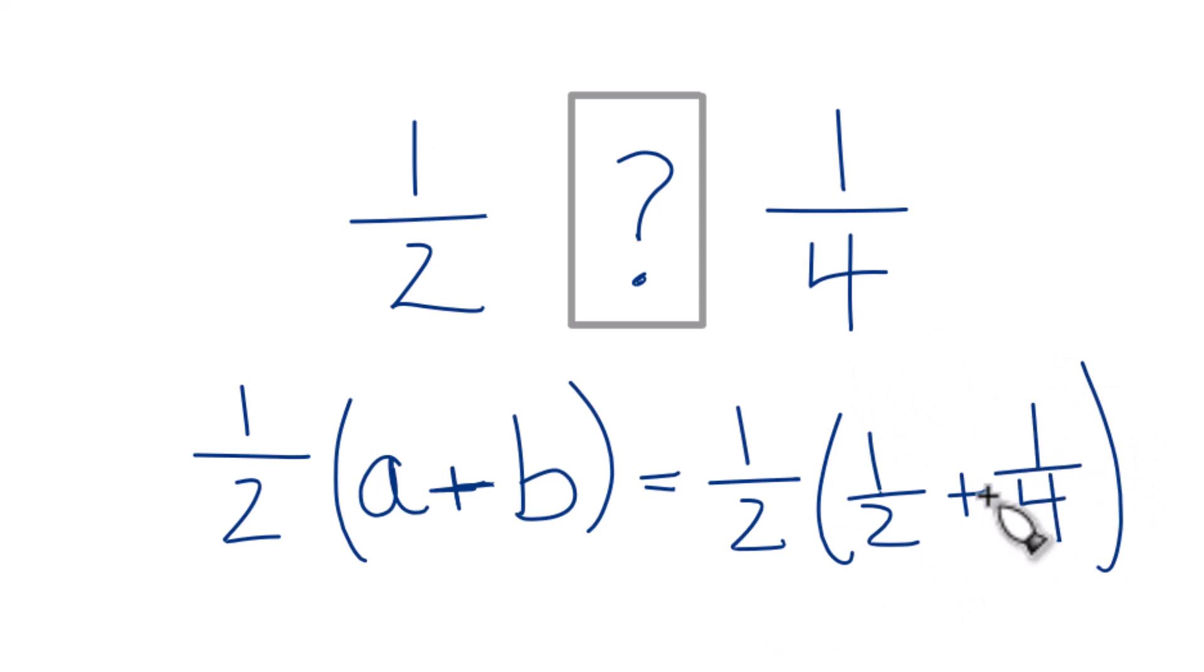Probably the easiest way to do that is to multiply the numerator and denominator here by 2. So we have 2 fourths, then we have the same denominator. Then it's easy to add.